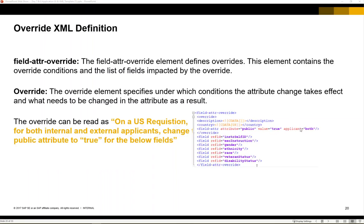In this case we also have applicant equal to both, meaning that this effect will happen for both internal and external applications. Underneath we see the list of field IDs — these are the fields that are defined as public equals false. But using this override, based on the country of the requisition, we want to change these values to public equals true. On the left-hand side we see what I consider a translation of how to read the override.